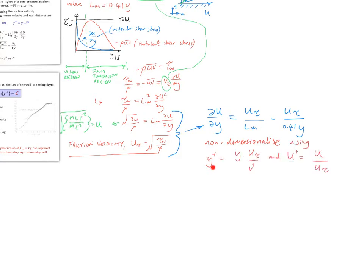So for this, we have our non-dimensional distance y plus is our physical distance y divided by our plus distance, our non-dimensional distance, nu divided by u tau. And this is a length scale. This divided by this is then a non-dimensional length scale. We do the same for the velocity. So we have our velocity divided by our friction velocity, and we get our plus velocity, u plus.